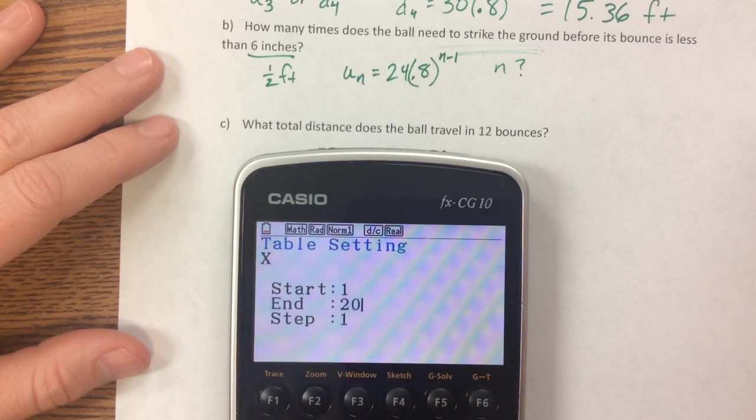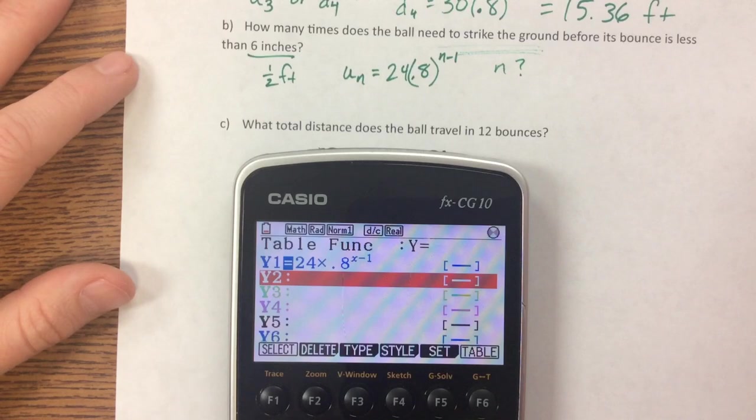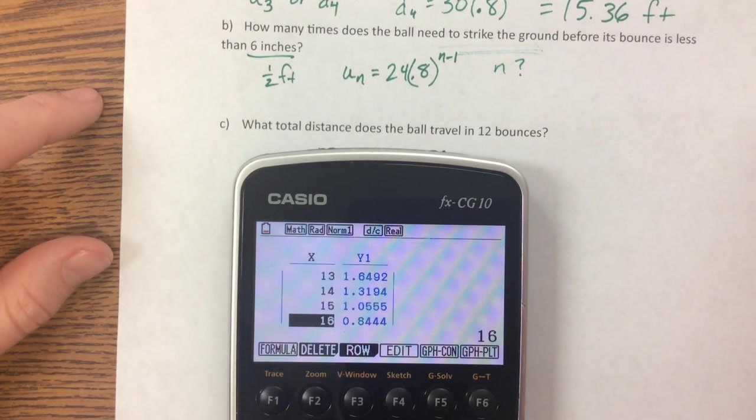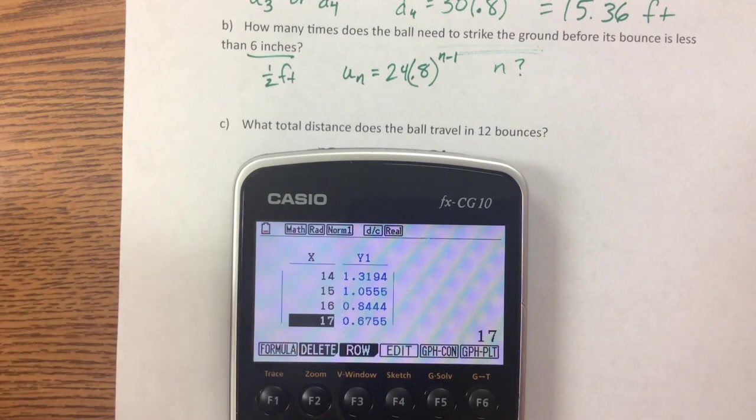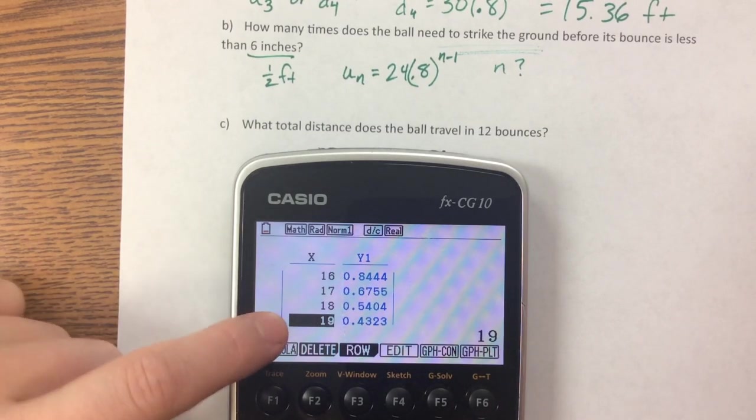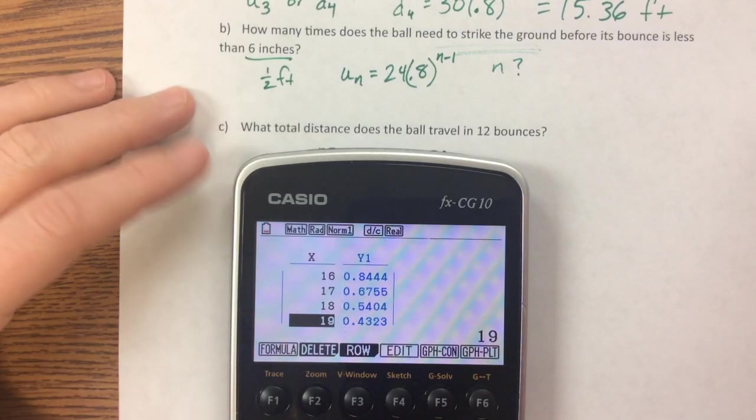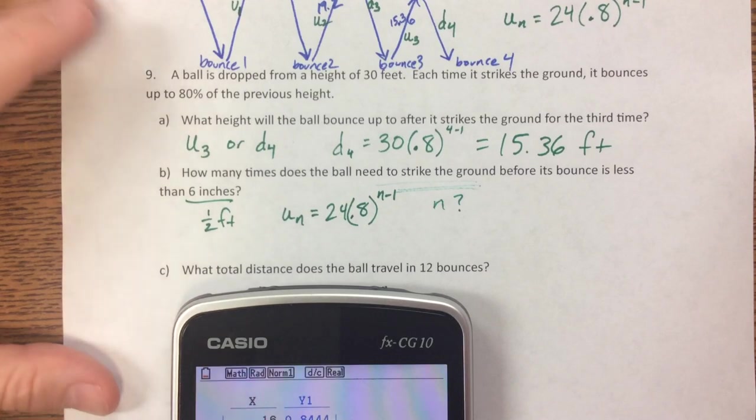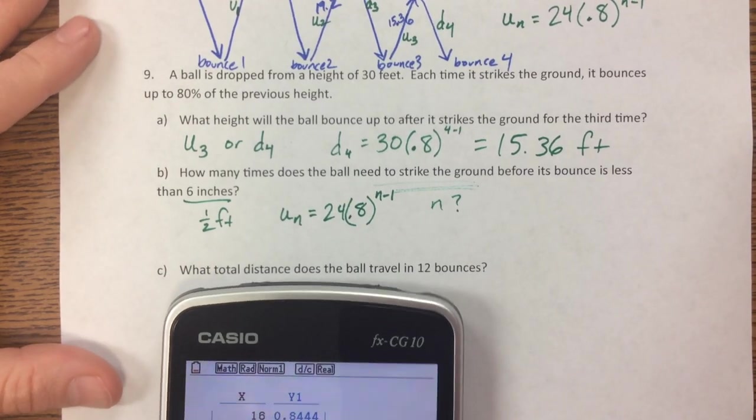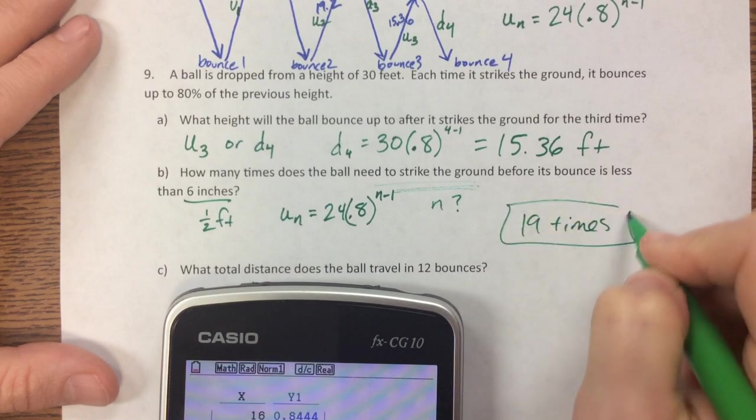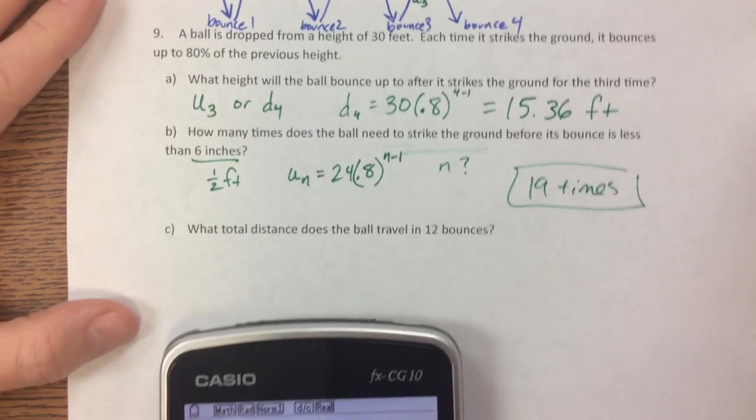Or I can exit out and set, let's try to 15. I don't think it's going to, let's see. Still more than a half a foot, still more than half a foot. So by the 19th bounce it bounces up. How many times does the ball need to strike the ground before its bounce is less than six inches? 19 times, and that's the answer to that problem.